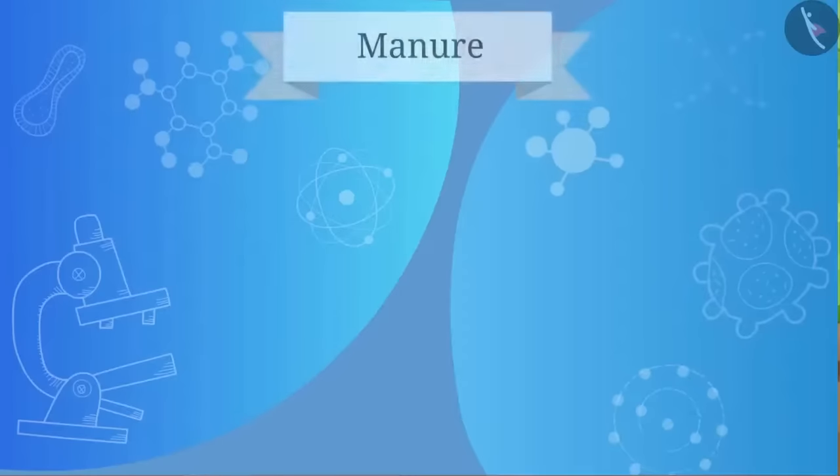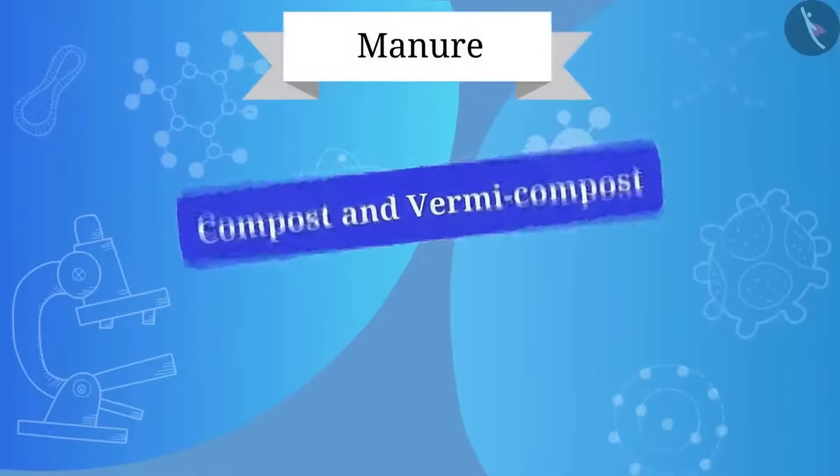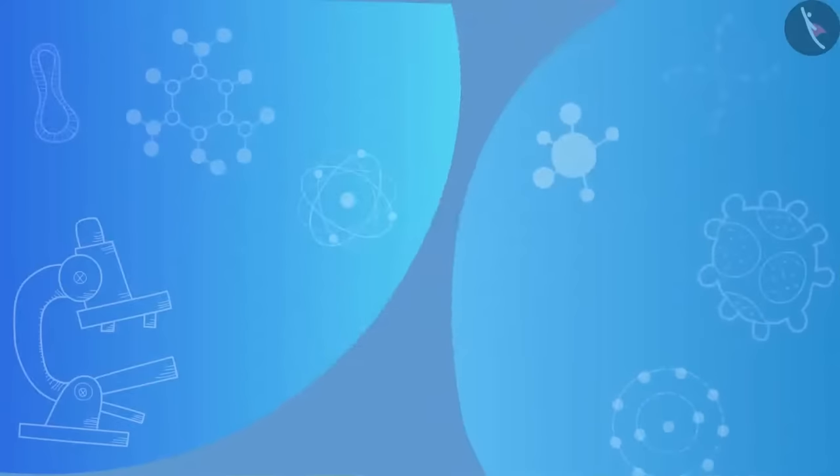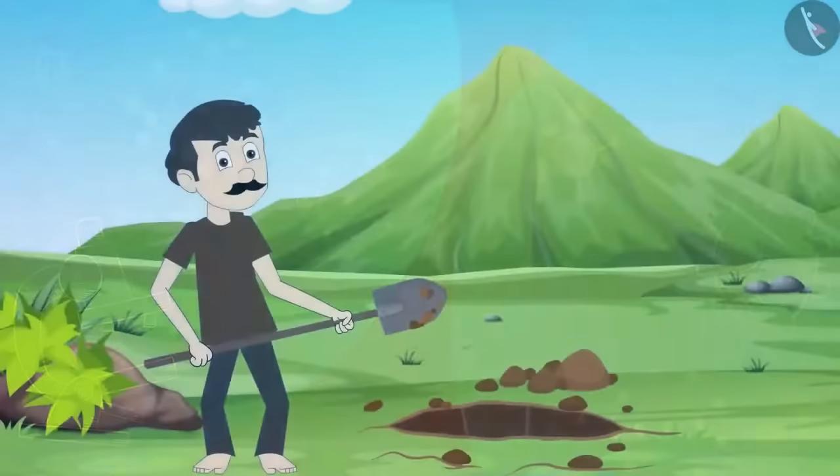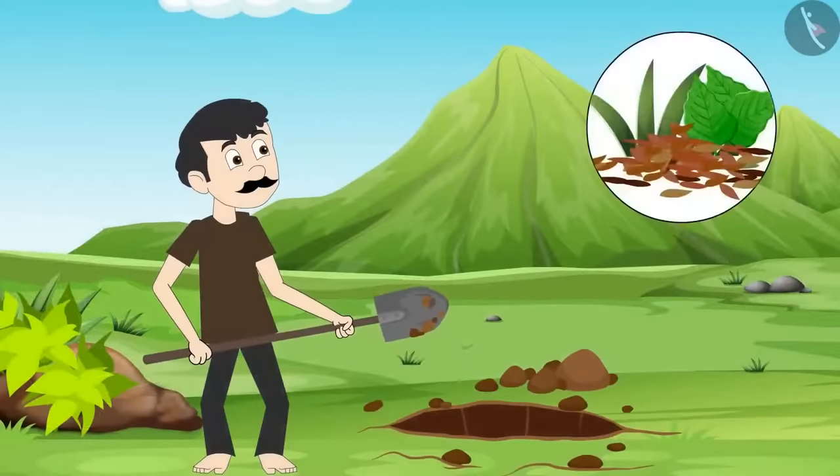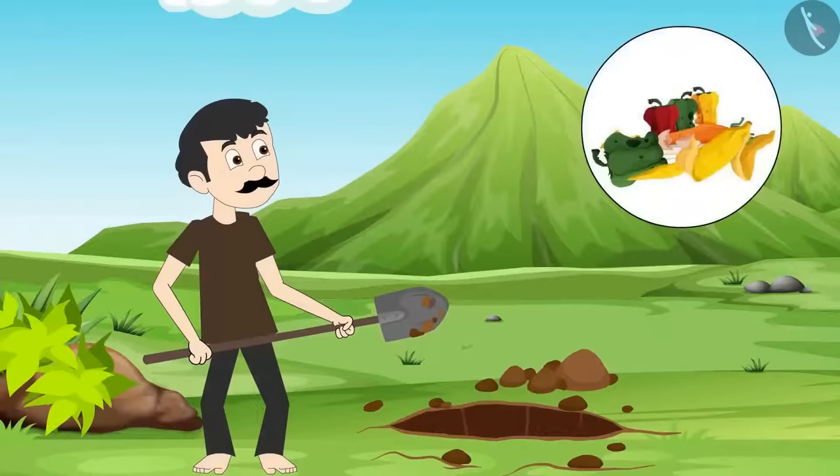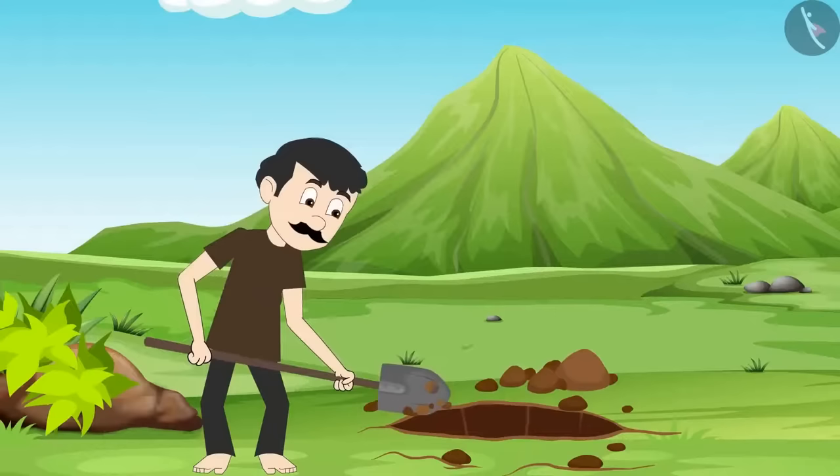Manures are of two types: compost and vermicompost, and the other is green manure. In compost and vermicompost process, vegetable waste, animal feces, household waste, etc., are decomposed in pits. This is known as compost.